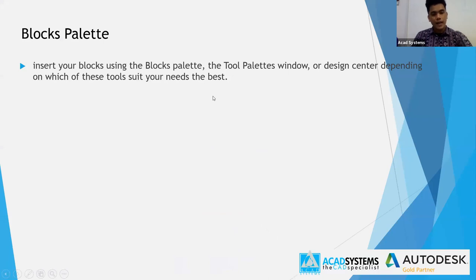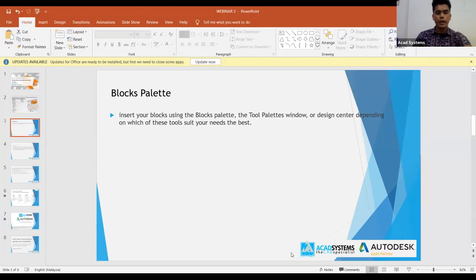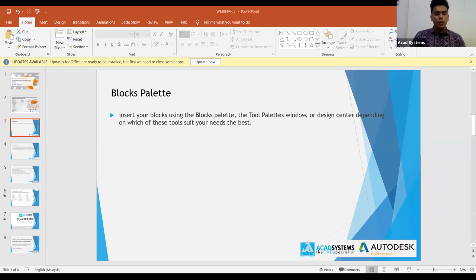Sekarang saya akan tunjukkan cara macam mana nak pakai Block Palette menggunakan AutoCAD 2021. Majority rata-rata dah tahu apa kegunaan Block. Kegunaan Block adalah untuk memudahkan proses melukis — tidak memerlukan kita untuk melukis semula block ataupun satu-satu bahan.